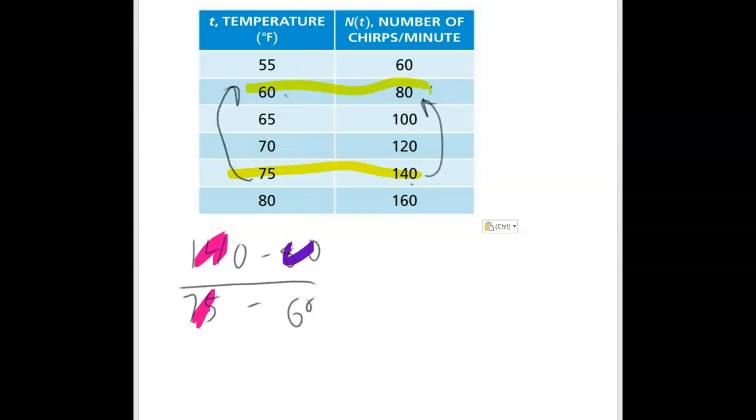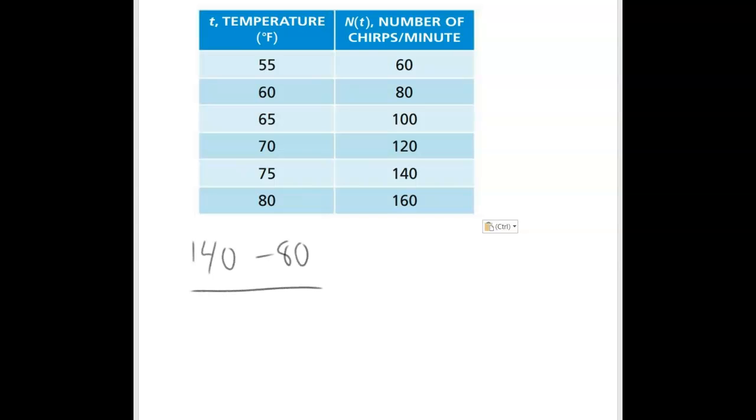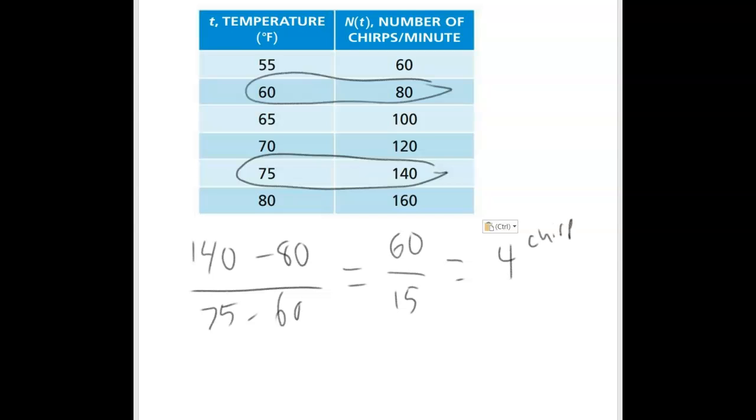I could do 80 minus 140, but if I did that, I would have to do 60 minus 75. Because I started with the 140, I have to do 75 minus 60 on the bottom. The 140 goes with the 75, and the 80 goes with the 60. I had 140 minus 80 over 75 minus 60. 140 minus 80 gives me 60. 75 minus 60 gives me 15. 60 divided by 15 gives me 4. This is still 4 chirps per minute per degree F.